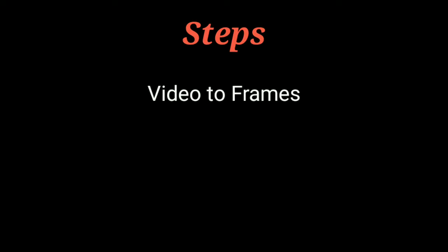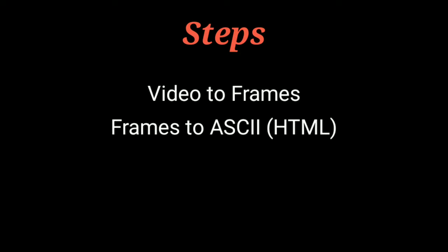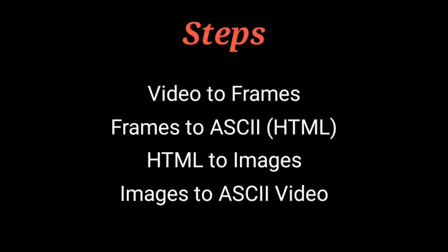First, let's take an overview of what we are going to do. Step one is to choose a video and convert it into frames. Step two is to convert all the frames into ASCII and save it in an HTML file to get colored characters. Step three is to convert all the HTML files into images. The final step is to combine all the images into a video and add sound to it.